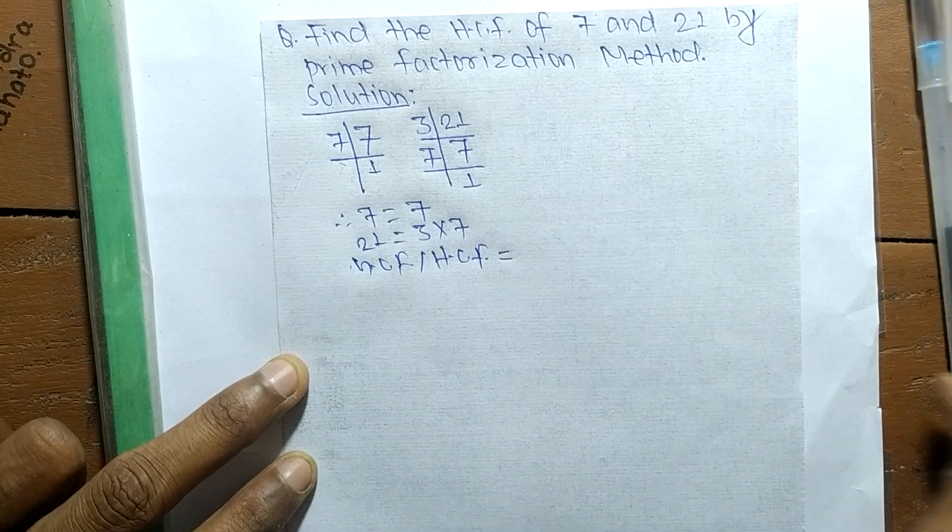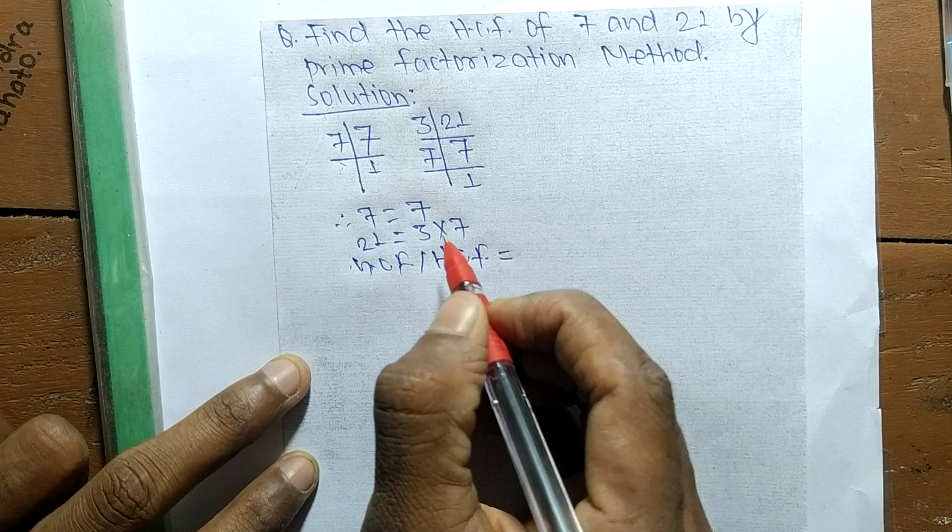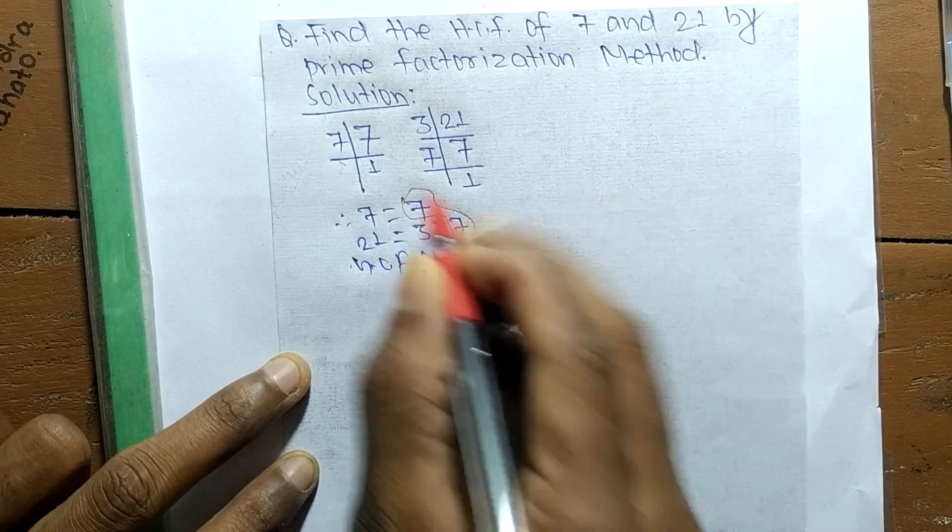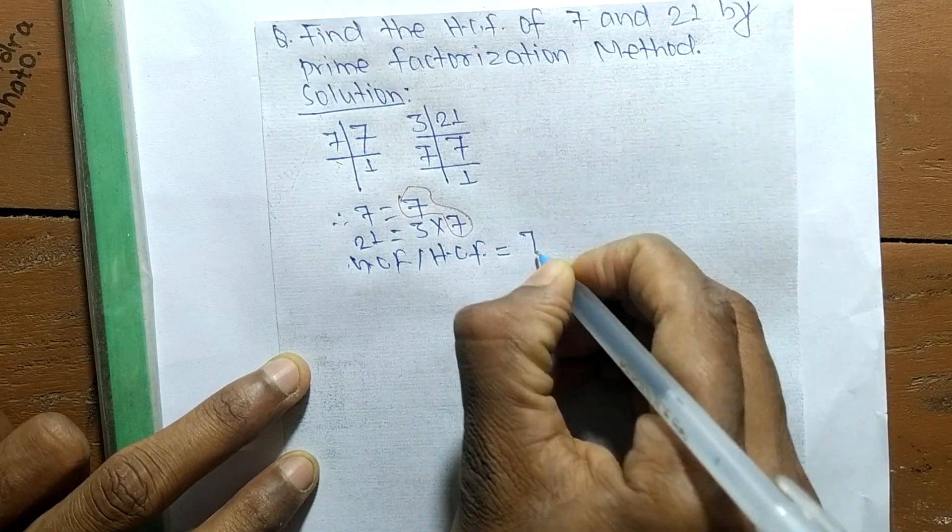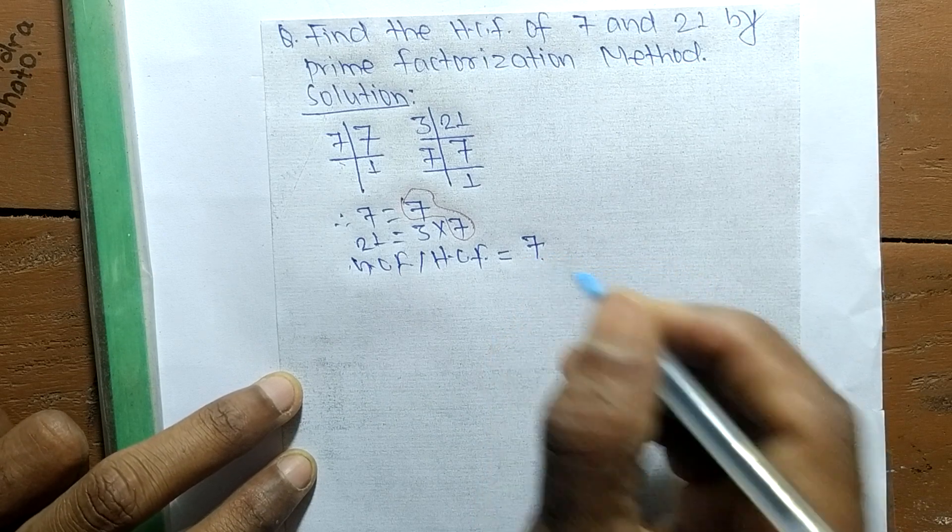GCF or HCF equals the common elements in all these prime factors. The common element here is 7, so GCF or HCF is equal to 7. So this much for today and thanks for watching.